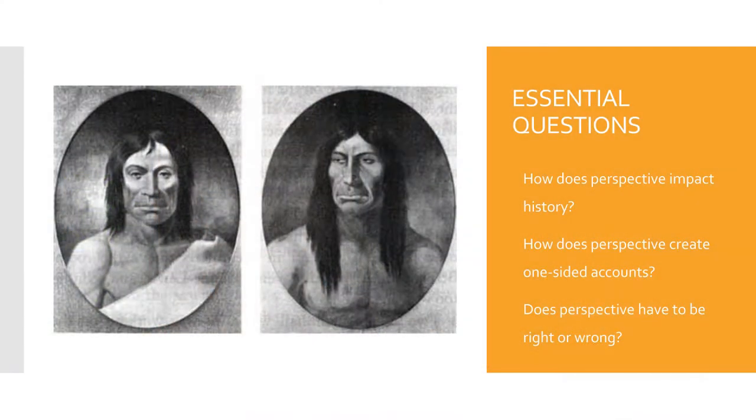The unit essential questions are the deep thinkers — these are the questions that transition to the real world. For example, in my scope and sequence: How does perspective impact history? Does perspective have to be right or wrong?